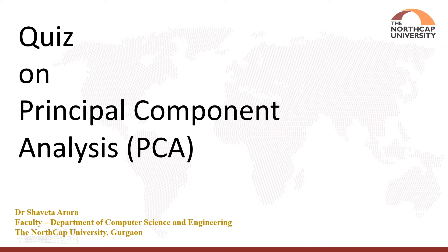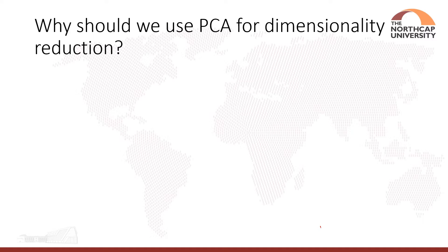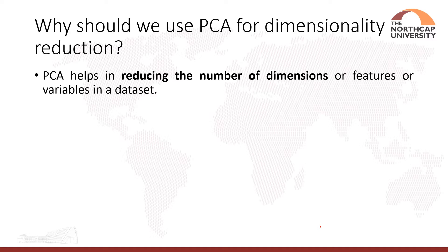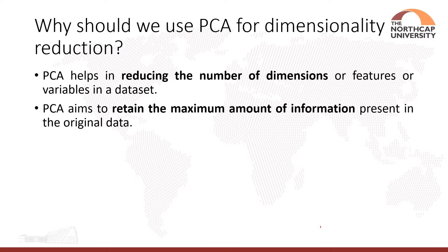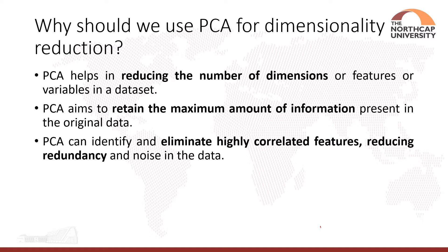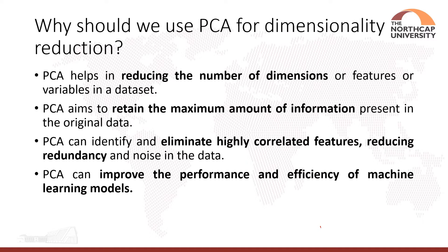Let's discuss a few questions on Principal Component Analysis. The first question is: why should we use PCA for dimensionality reduction? PCA helps in reducing the number of dimensions, features, or variables in a dataset. PCA helps retain the maximum amount of information present in the data. PCA can identify and eliminate highly correlated features, reducing redundancy and noise. PCA can also improve the performance and efficiency of machine learning models. So all the above options are correct.